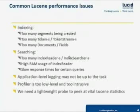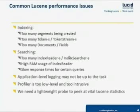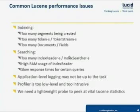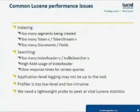Similarly, searching performance suffers when you open too many index readers and index searchers. In a highly concurrent application, it's not always obvious how many index readers are open at any given point in time. Another problem is related to high RAM usage of the index reader. If you use many fields with norms, then norm arrays will consume a lot of RAM. Similarly, if you use faceting on many fields, then facets that indirectly use field cache will consume a lot of RAM.